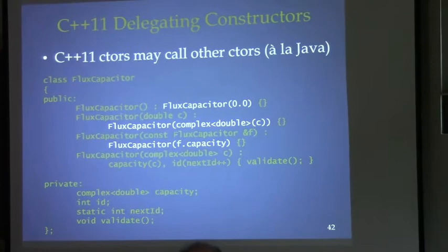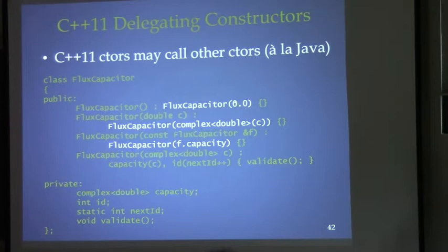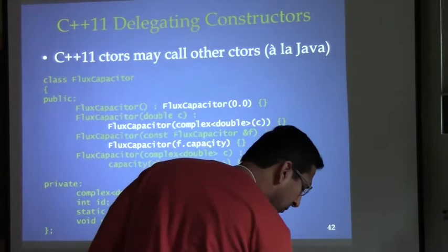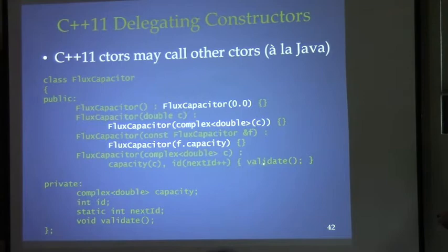In C++11, it steals another Java feature: one constructor can call another. You can consolidate all the actual work into one constructor, and the others just delegate. The default constructor fills in a value of 0.0 and calls the complex constructor. The one taking a double turns it into a complex and calls that constructor. This eliminates many places where the ID has to be computed and validation has to take place.